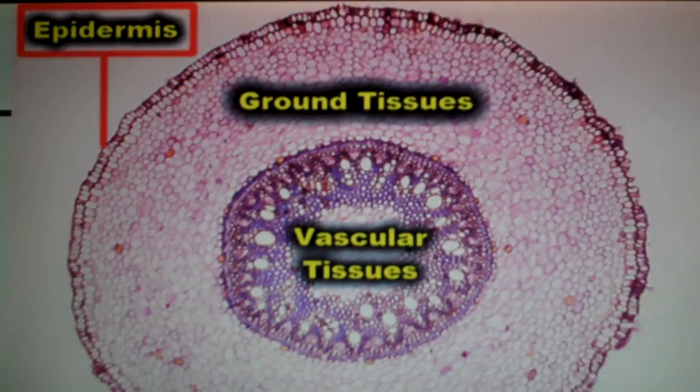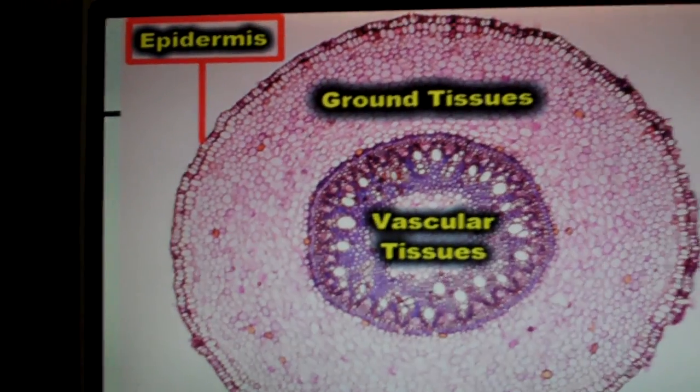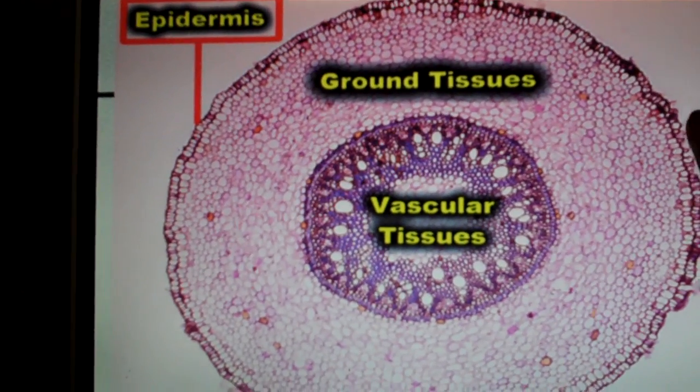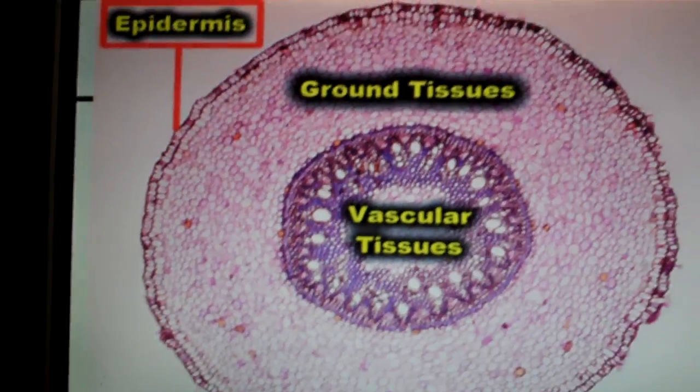Here we have another picture. I believe this is in a root. We have our epidermis here on the outside, our ground tissues, and then our vascular tissues in the middle.